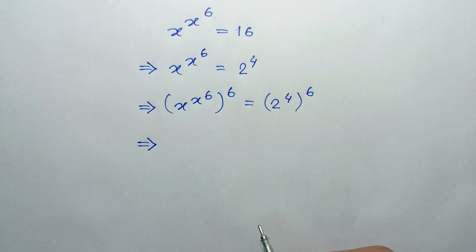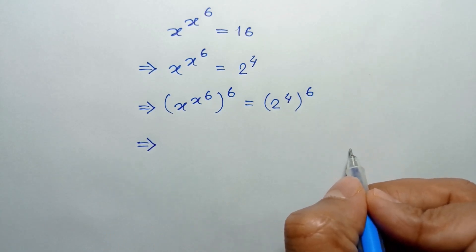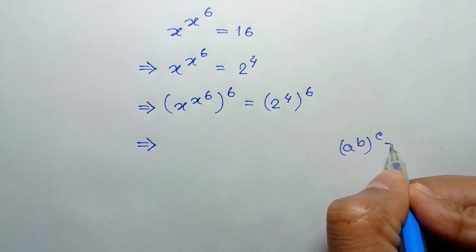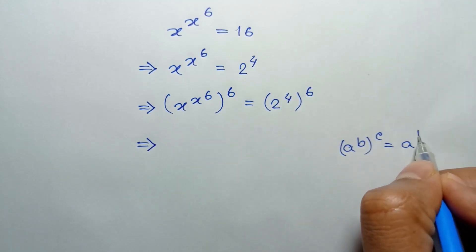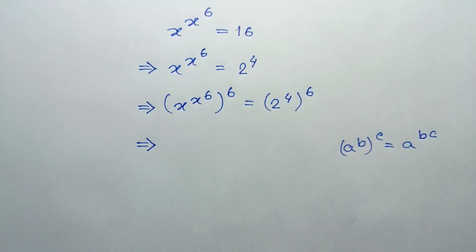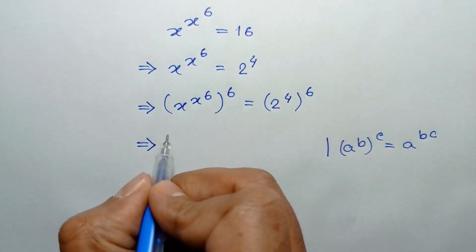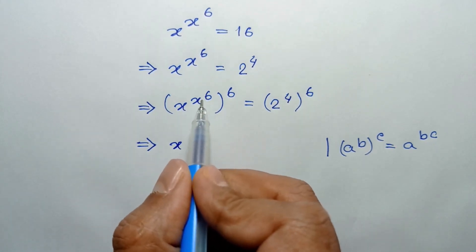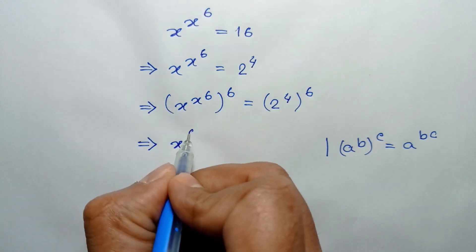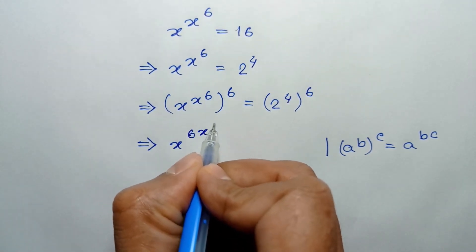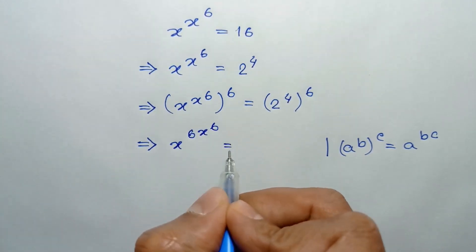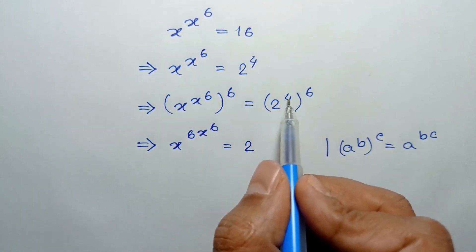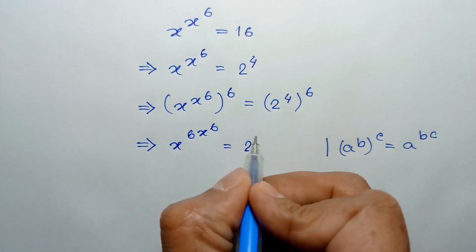According to the exponential formula, a to the power b, whole to the power c, is equal to a to the power bc. We can write this as x to the power x to the power 6 times 6, which gives x to the power 6, is equal to 2 to the power 4 times 6, which is 24.